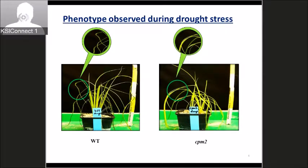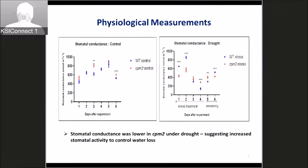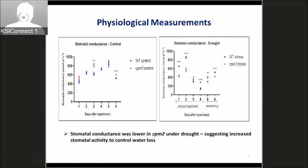Based on this phenotype we further decided to compare the physiological parameters. We first looked at stomatal conductance. Under control conditions both genotypes did not show much variation; however, under drought the stomatal conductance was lower in CPM2 as compared to the wild type, suggesting increased stomatal control to limit water loss.